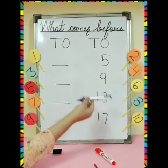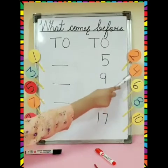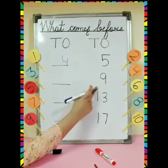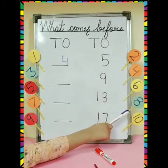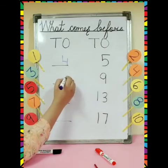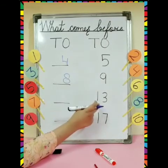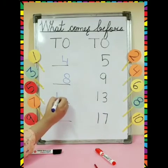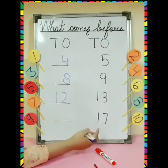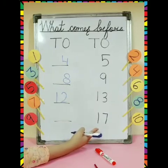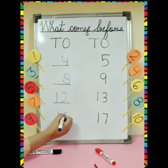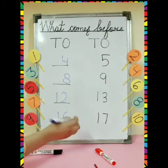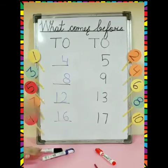You know it well — it's number 4. We will write here: number 4. What comes before 9? It's number 8, so we will write here: number 8. What comes before 13? Number 12 — we will write number 12. What comes before 17? It's number 16. We have done the exercise.